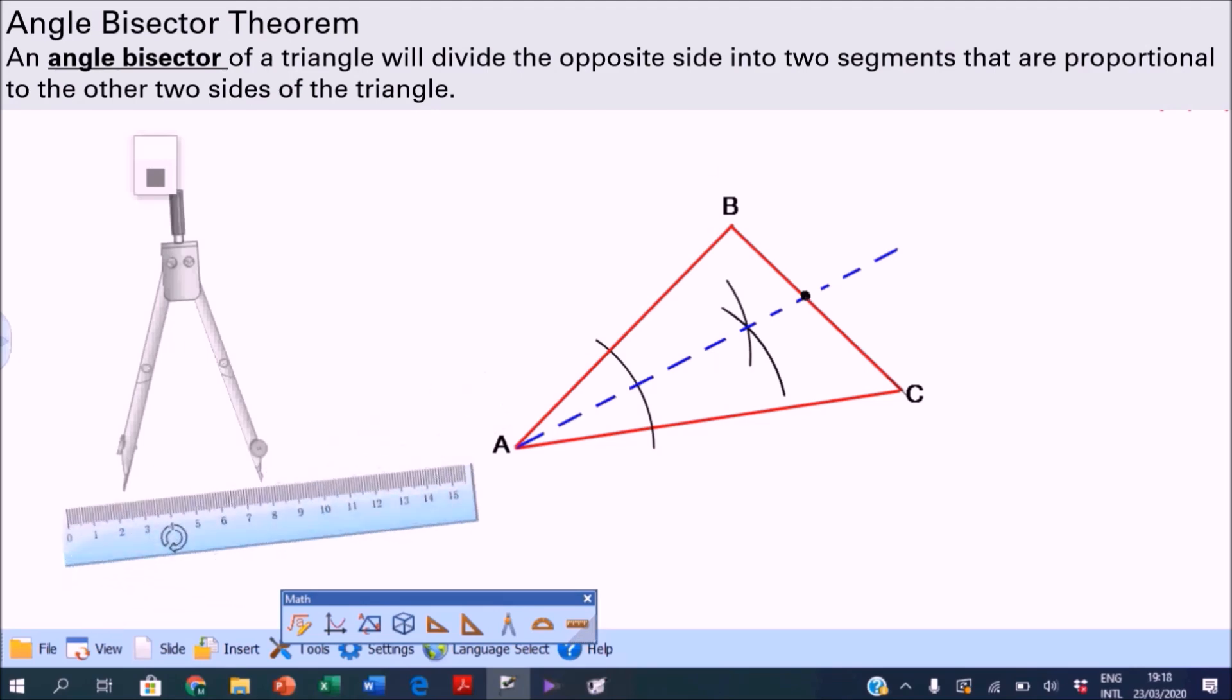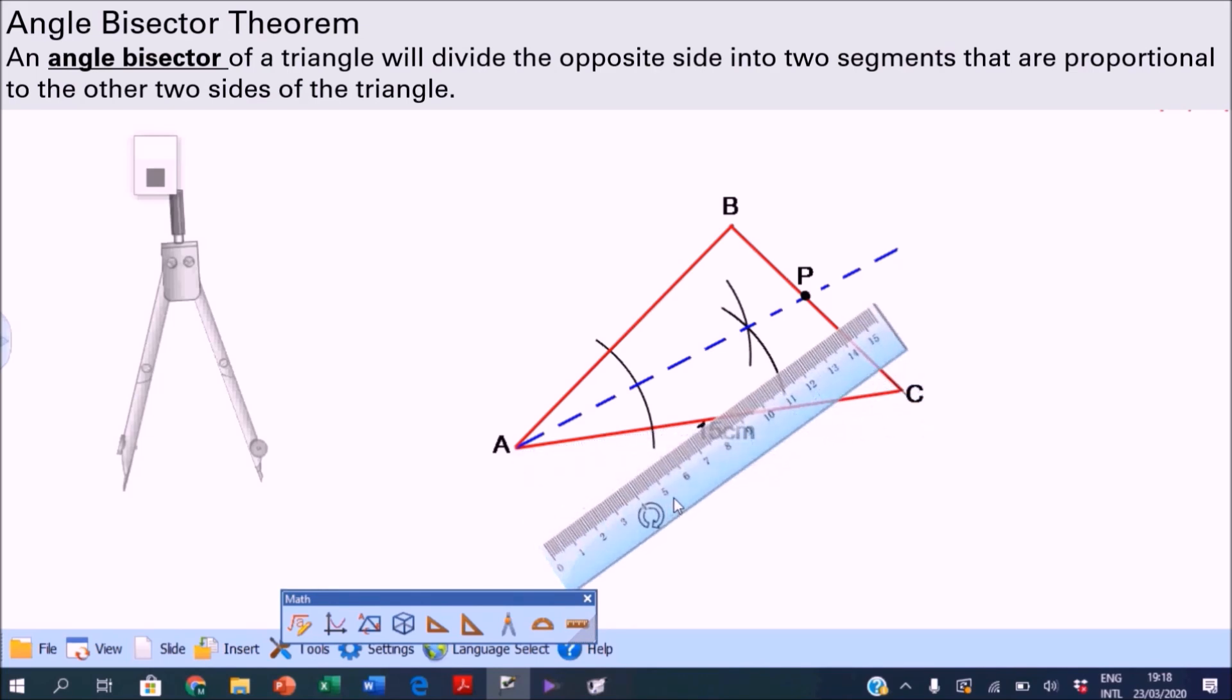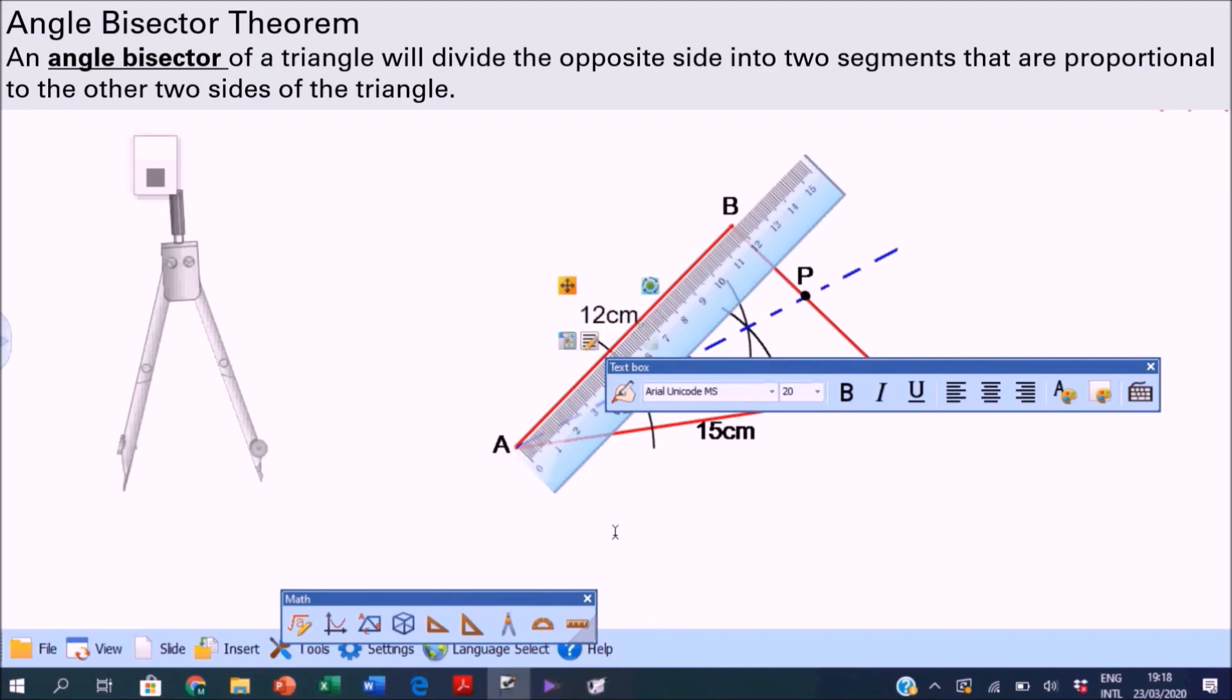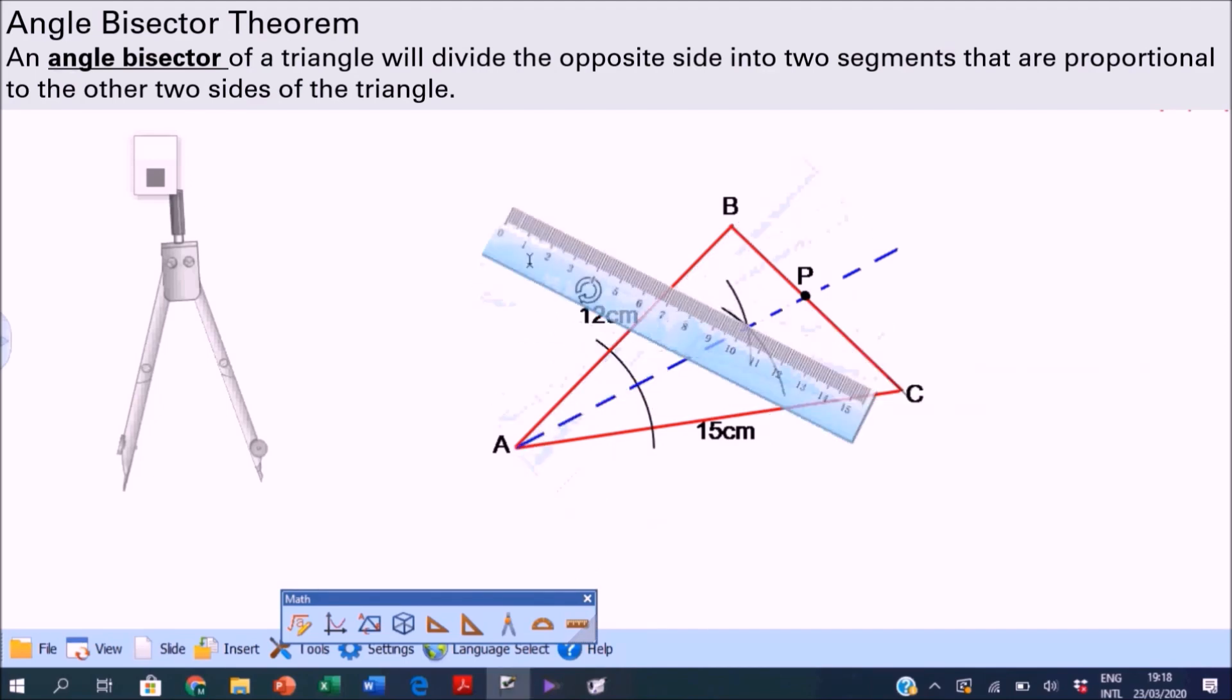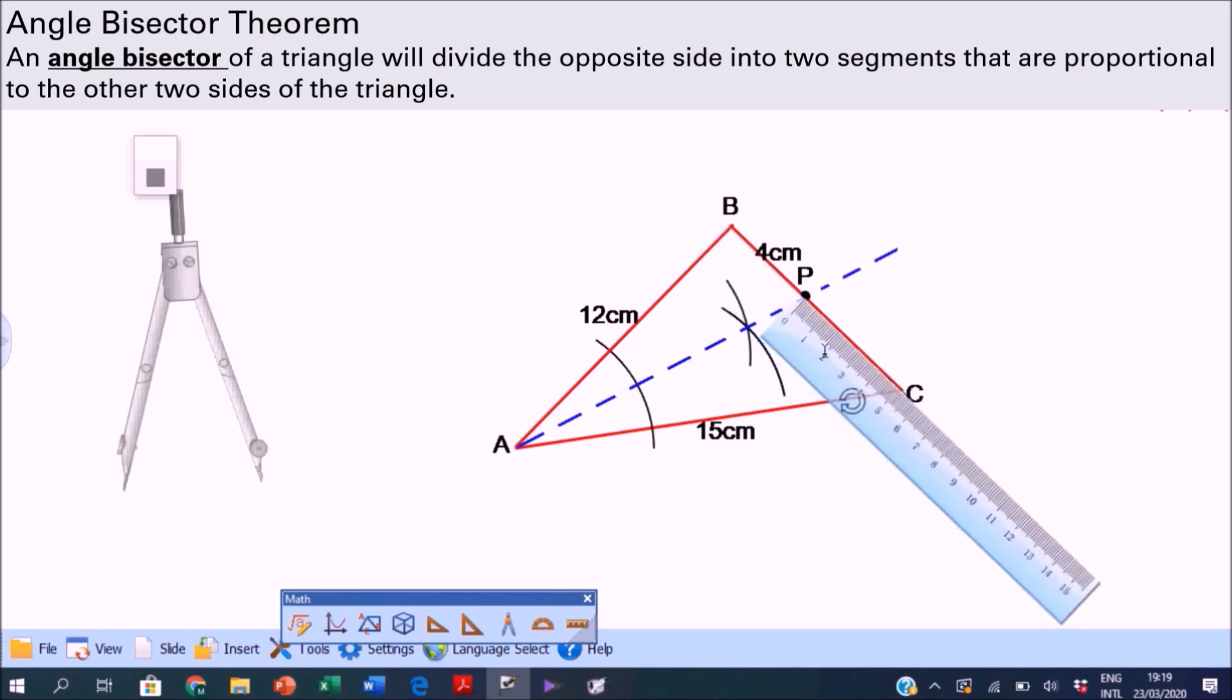Now mark the point of intersection P and measure the sizes. So AC is 15 centimeters, AB is 12 centimeters, BP is 4 centimeters, and PC is 5 centimeters.